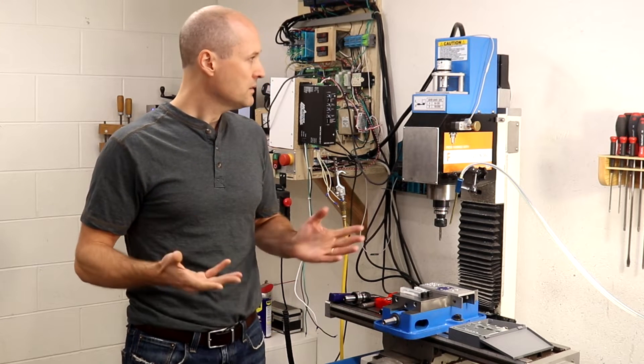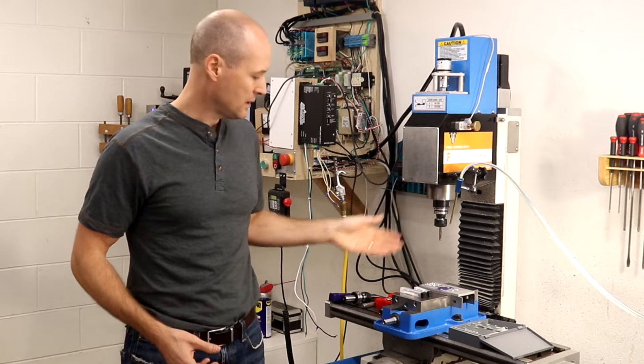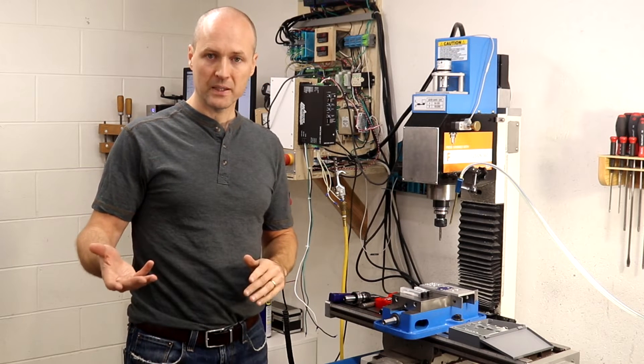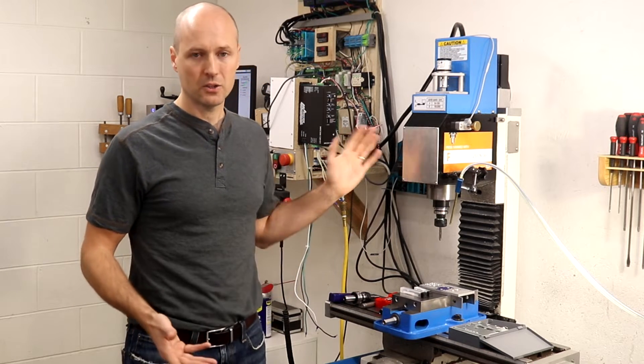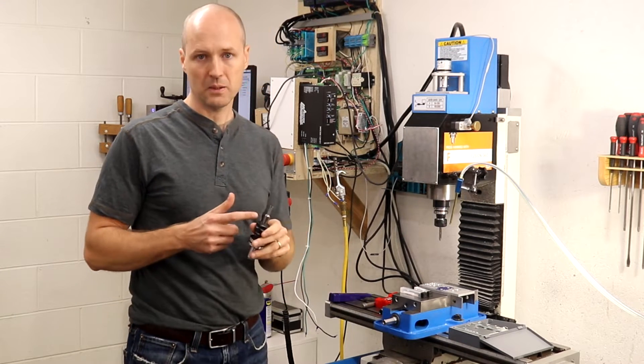The rest of the video is the construction of this assembly, testing using a spiral point and forming tap, some examples of problems that occur with the system if it's run too fast, and then comparison to a thread mill.